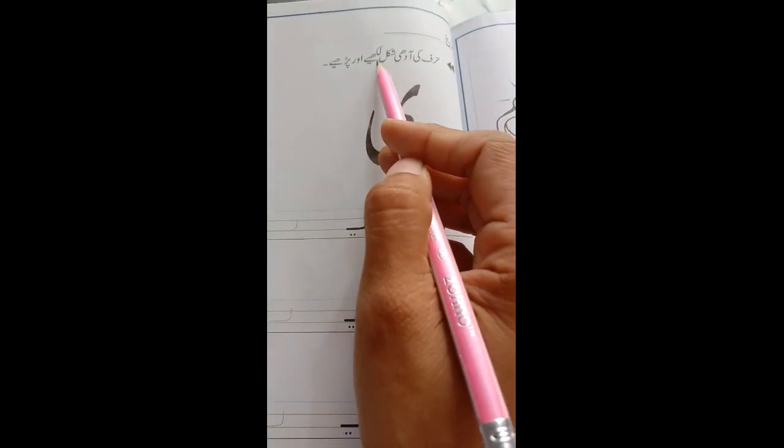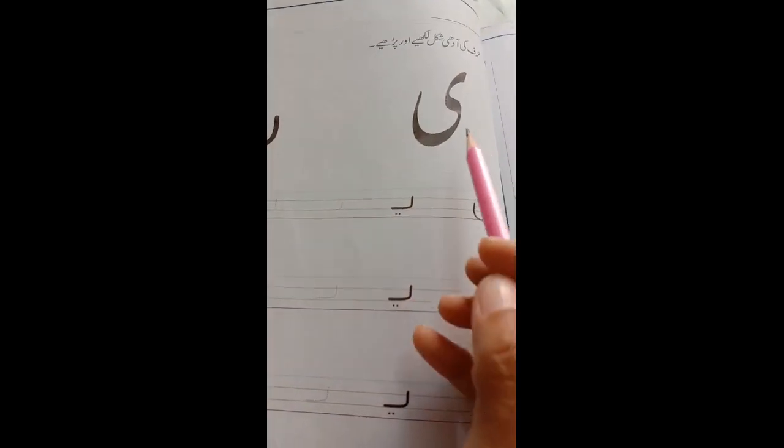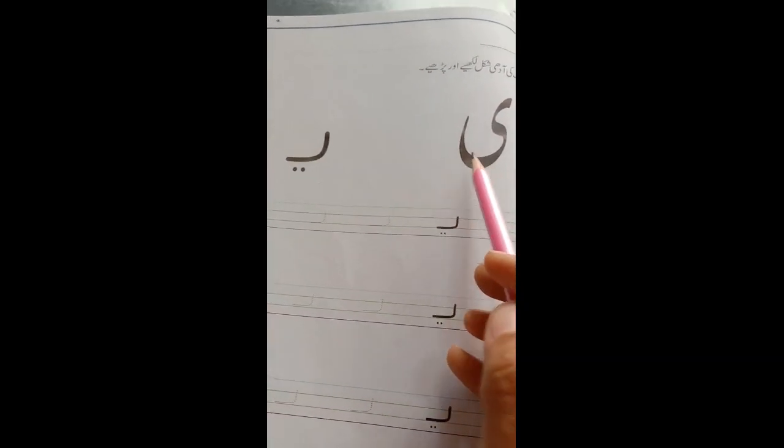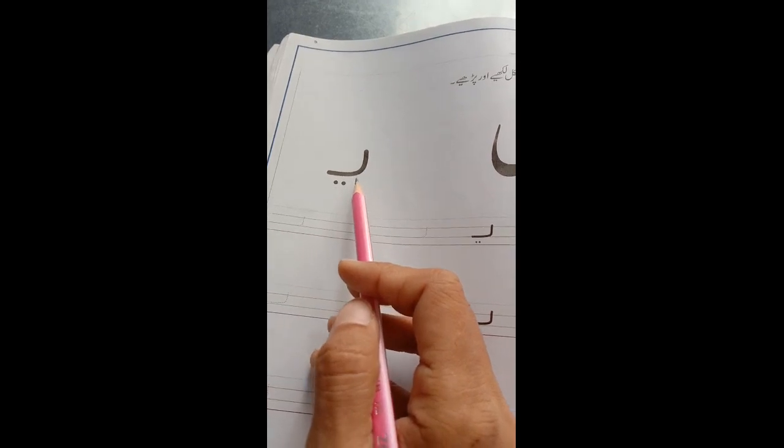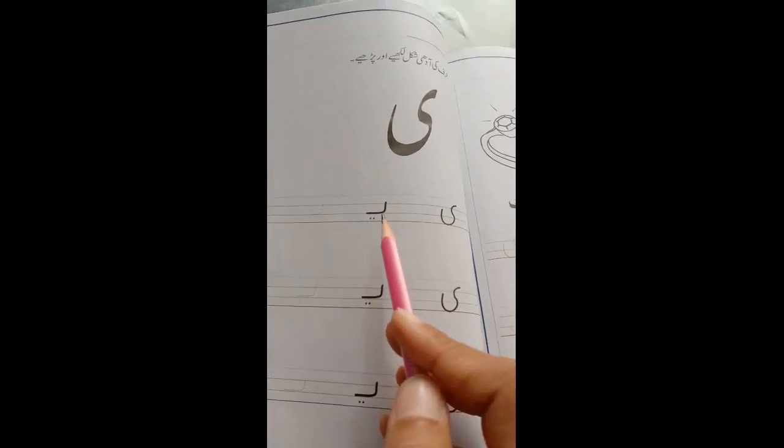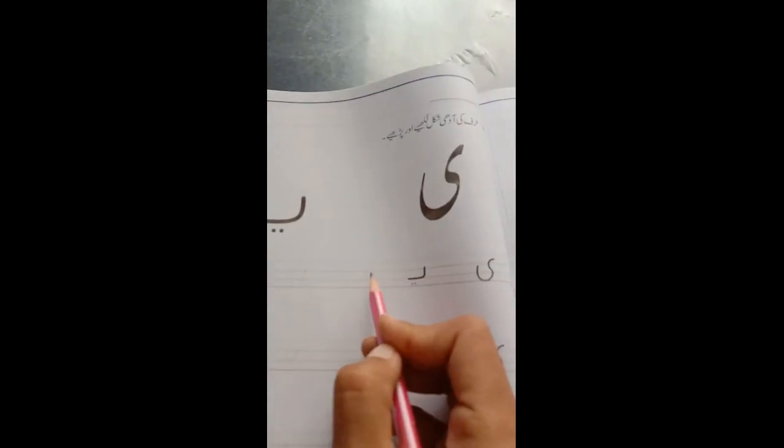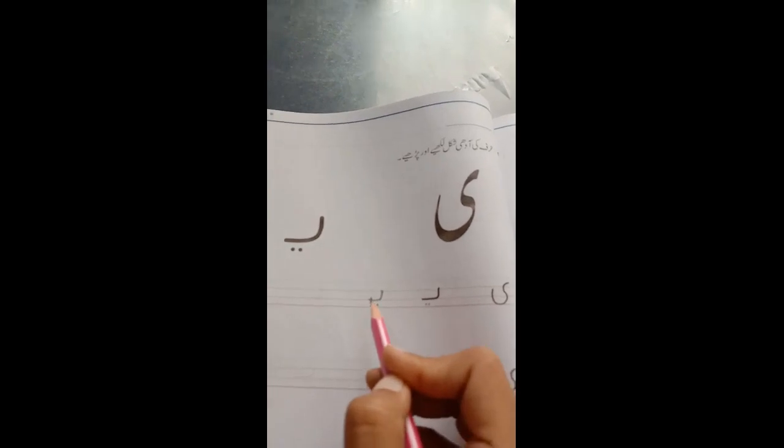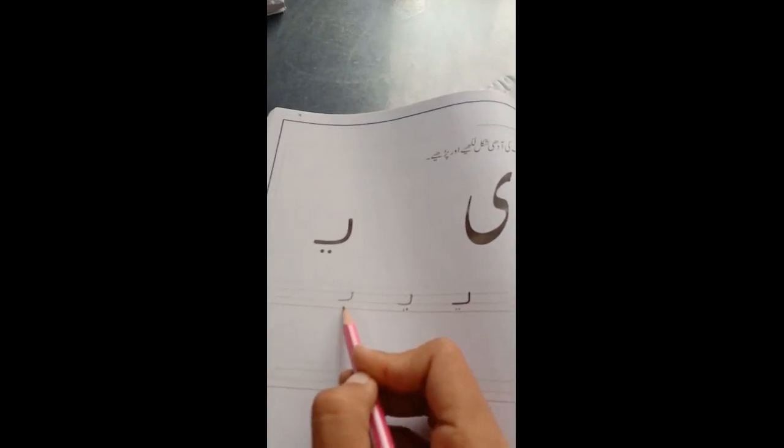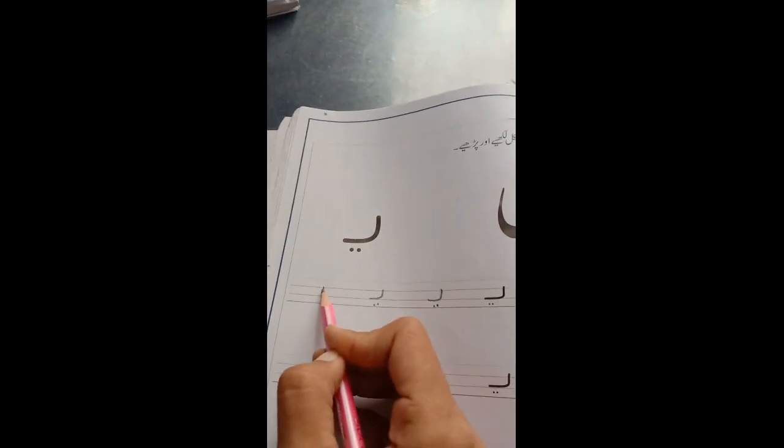Safa nombor 119. Huroof ki adhi ashkhaal likheye, aur padhye. Yeh kiya hai? Chhotiye. Or iski yeh, adhi shikal. Iski awaz kiya hote hai? Yeh. Yeh ke niche, dho nukpe. Yeh chhotiye, yeh iski yadhi shikal. Or yahaan pere aap iski marsha karenghe. Yaa. Chhotiye ki awaz kiya hote? Yaa. Yaa yaka. Yaa yaku.